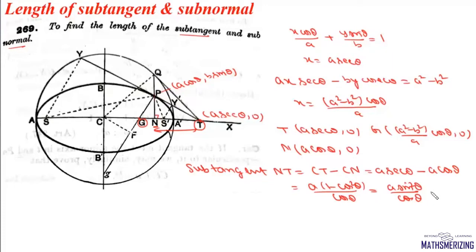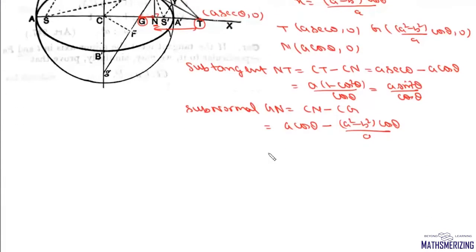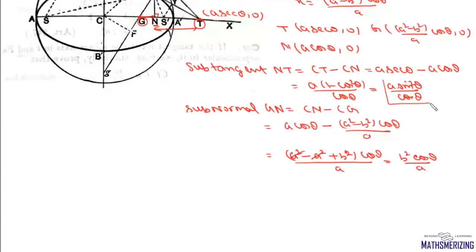In the same way, we find the length of sub-normal GN. Length of sub-normal equals CN minus CG, where CN = a cosθ and CG = (a² − b²) cosθ / a. Taking LCM: (a² − a² + b²) cosθ / a = b² cosθ / a. So the length of sub-tangent is a sin²θ / cosθ and the length of sub-normal is b² cosθ / a.